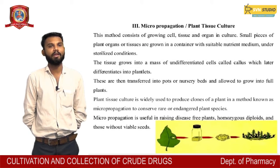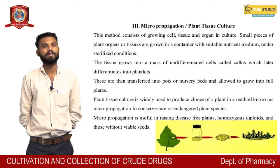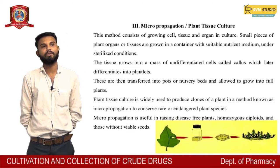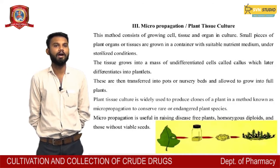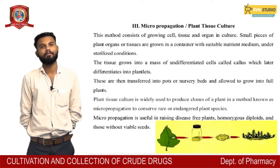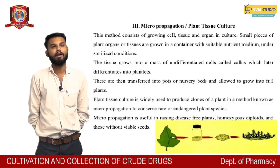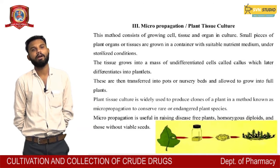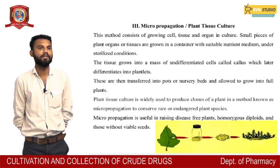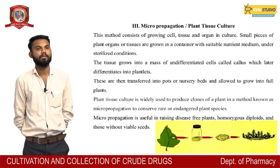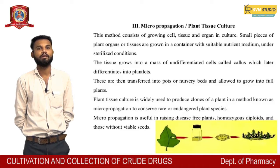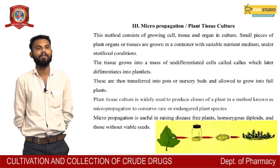Third method is micropropagation and plant tissue culture. This method consists of growing cells, tissue, and organs in culture. A small piece of plant organs or tissue is grown in a container with a suitable nutrient medium. Under sterilized conditions, the tissue grows into a mass of undifferentiated cells called callus, which later differentiates into plantlets. These are then transferred into pots or nursery beds and allowed to grow into full plants.